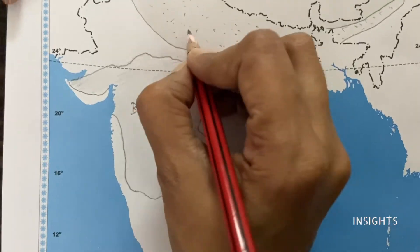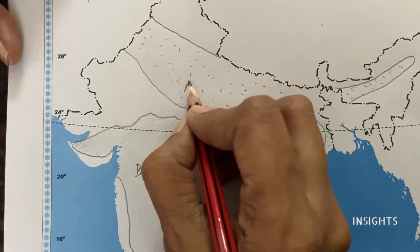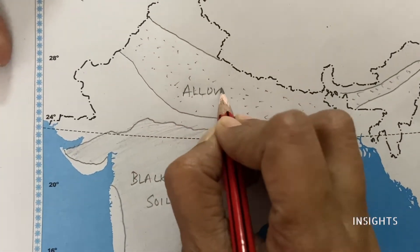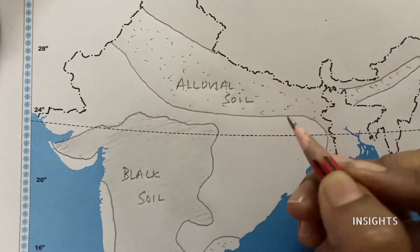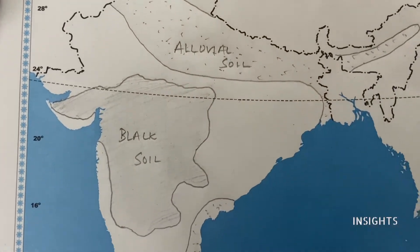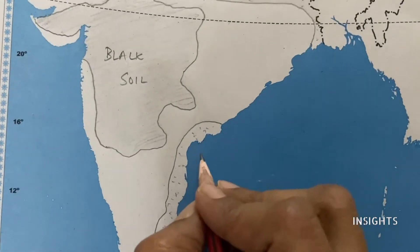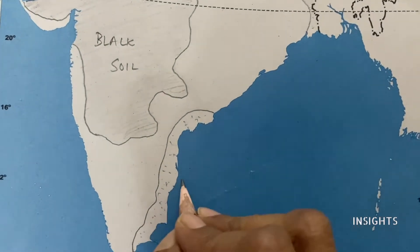Let's write the names on the map. Write 'black soil' here, 'alluvial soil' here, and note this area as 'coastal alluvium.'